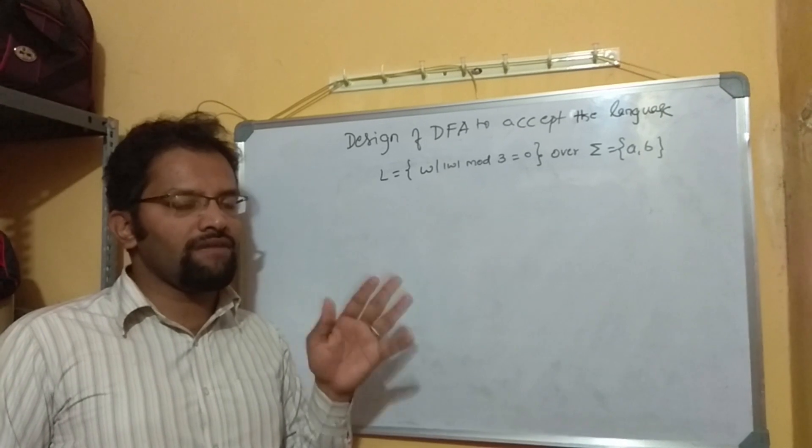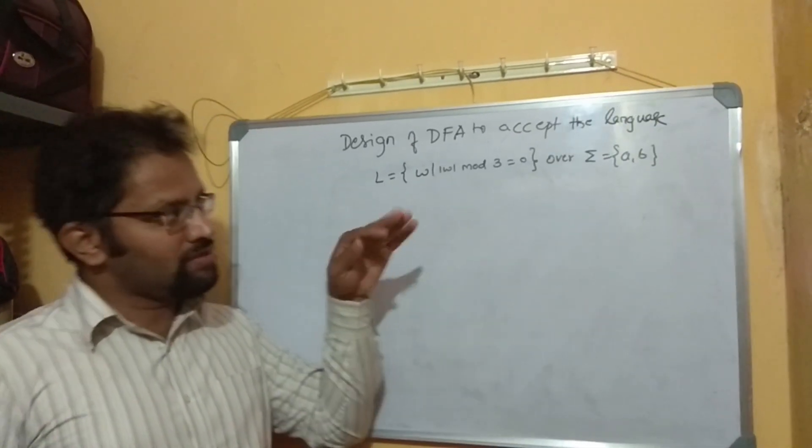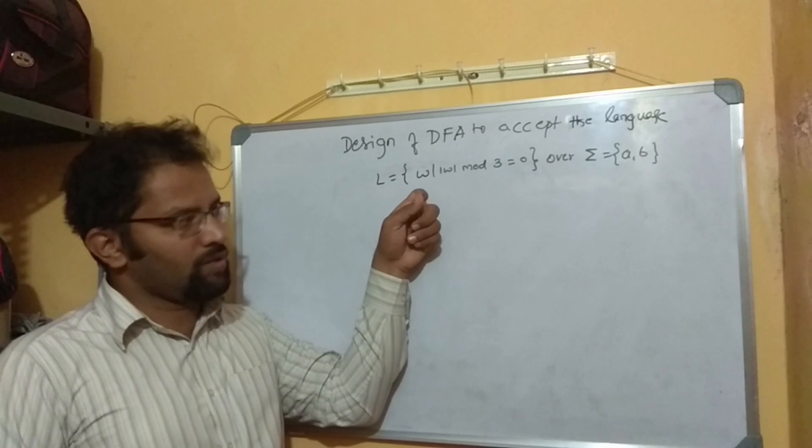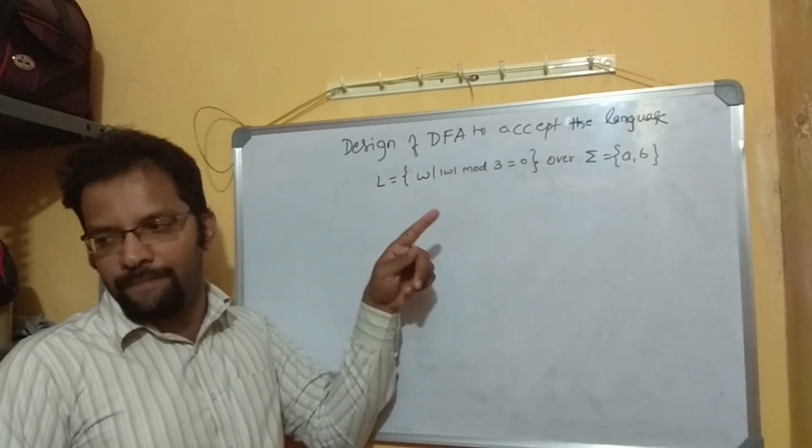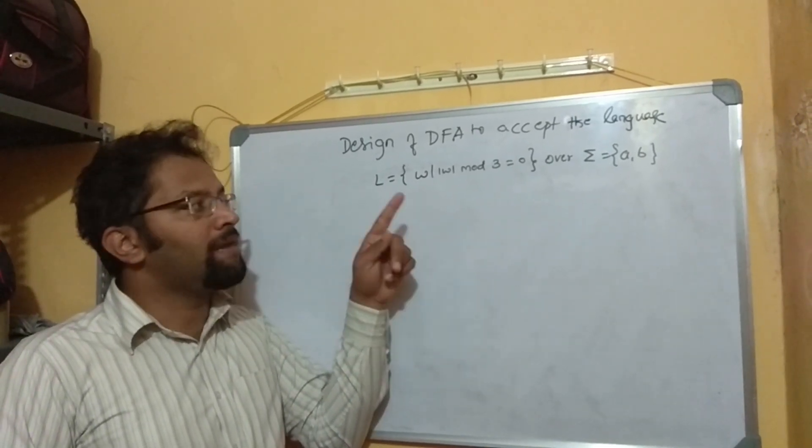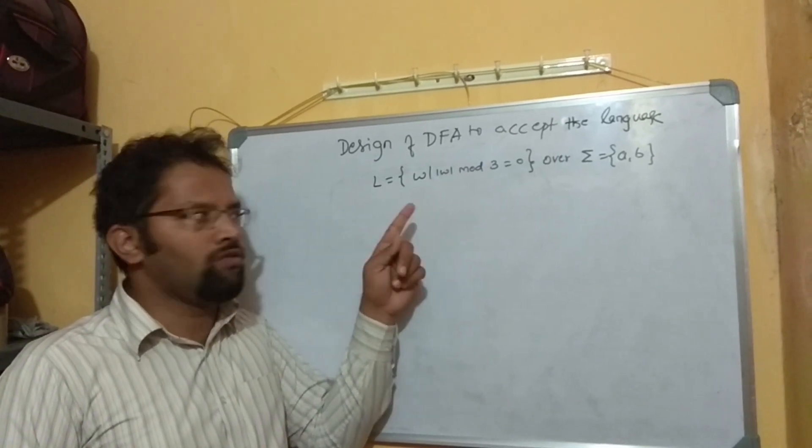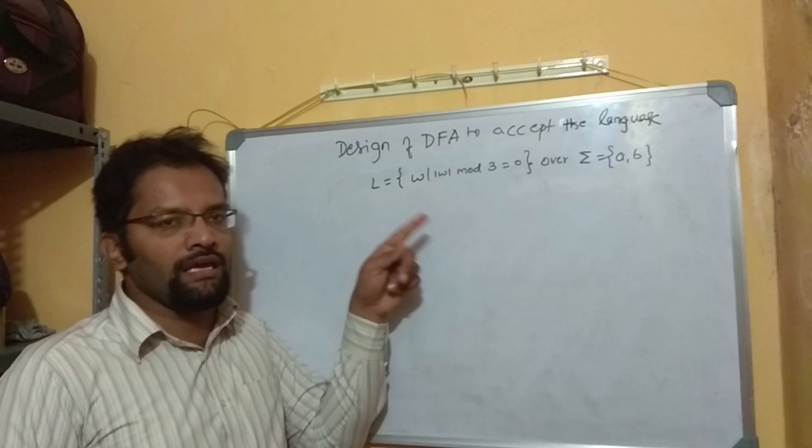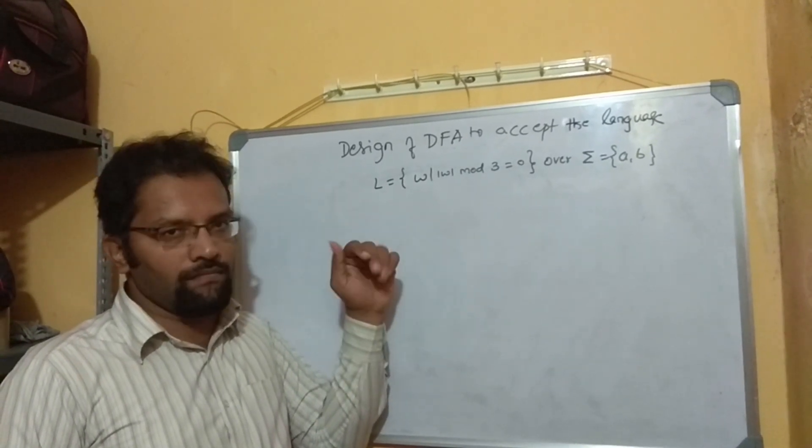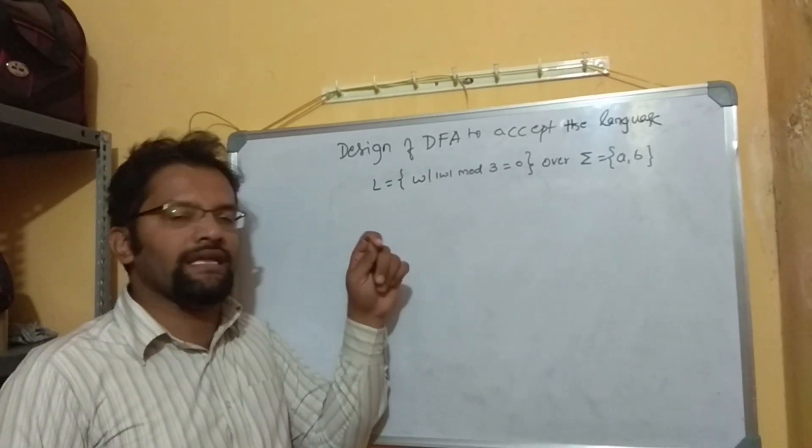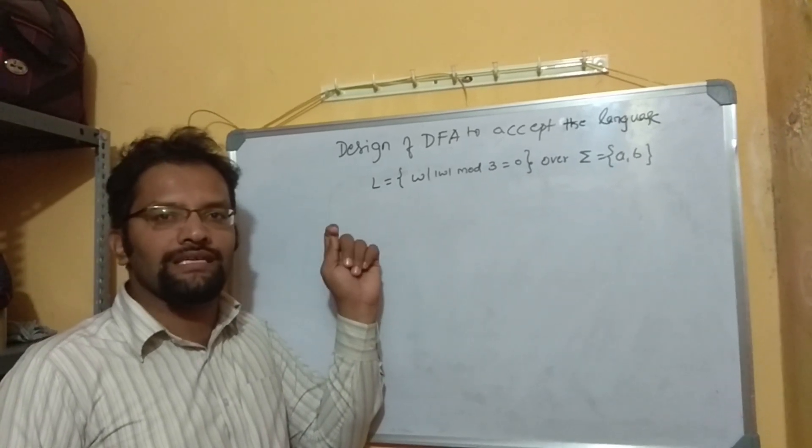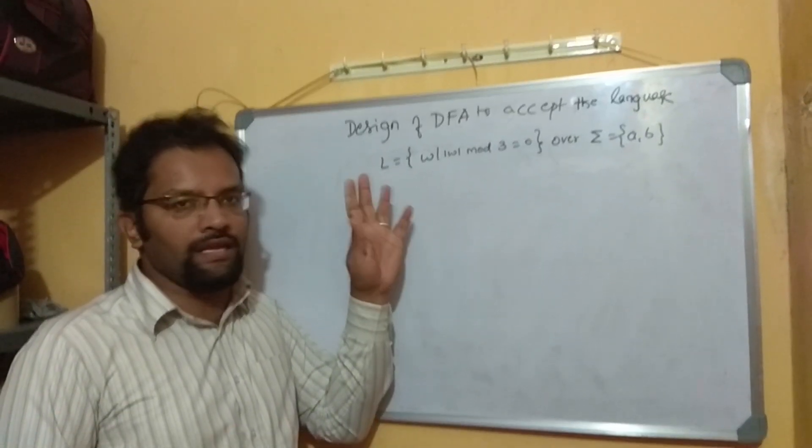We can give a question in many ways. Now what should I understand? When I talk about this question, sigma is AB. If you count the symbols in W, in the string W and if you divide it by 3, you should get 0. So, I can be very much clear that number of symbols in W should be multiples of 3.